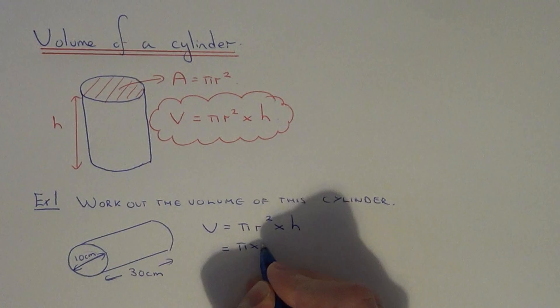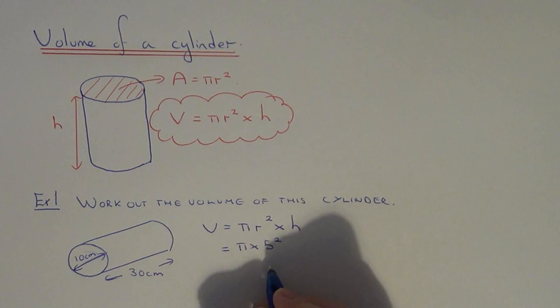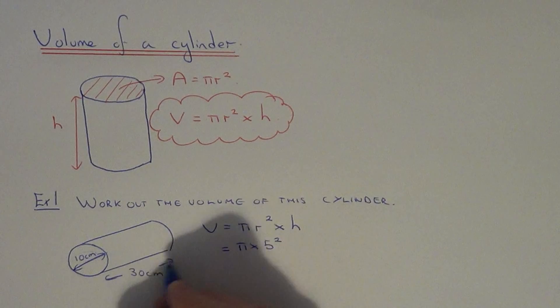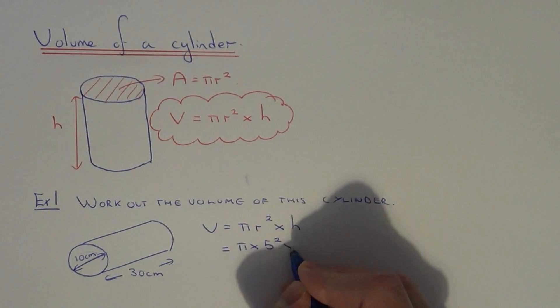So it will be pi times 5 squared. And then all we need to do next is multiply by the length of the prism, which is the same as the height. So we times this answer by 30.